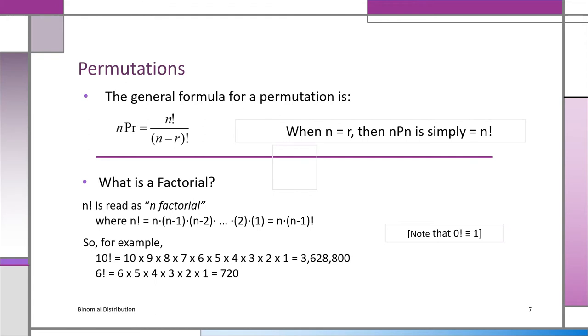The general formula for permutation, you want to do it by formula, not by calculator. NPR is N factorial over N minus R factorial. And what does factorial mean? So, 10 factorial means 10 times 9 times 8 times 7 times 6 times 5 times 4 times 3 times 2 times 1. It's actually 720. Always remember 0 factorial is 1. So, NPR is N factorial over N minus R factorial. Of course, when N equals R, the NPN becomes N factorial over N minus N, which is 0 factorial, which is 1. So, NPN is simply just N factorial.